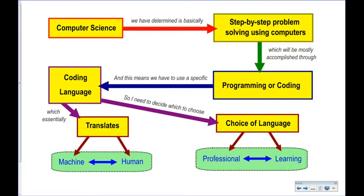It talked about how when you explain something step-by-step you can do that in a very precise, roadmap-like way — i.e. flowcharts. That got your brain hopefully in the right mindset, because in computer science you have to explain things to the computer in a really step-by-step way. We usually call that coding or programming.